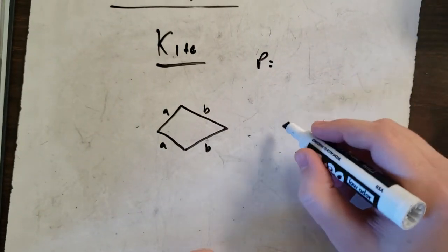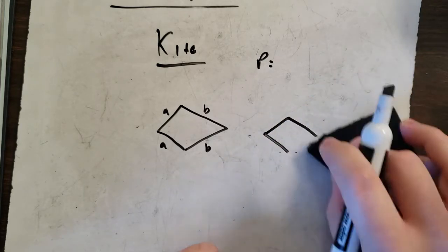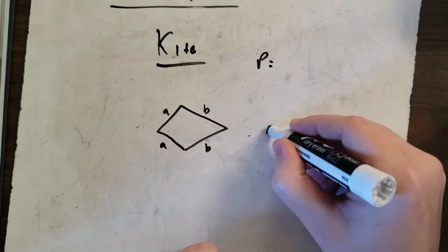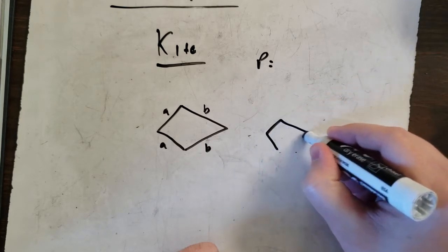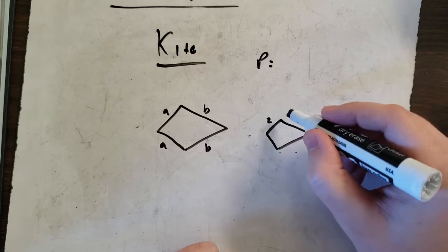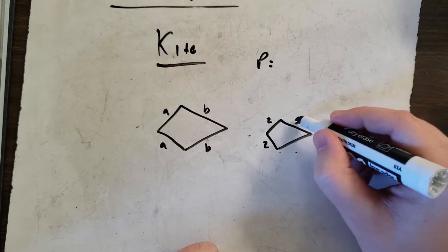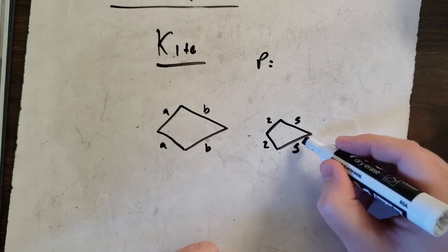So if we did that. I'm not good at drawing. So if this one was 2, this bottom one also is 2. And this one, let's say, is 5. This one is also 5.